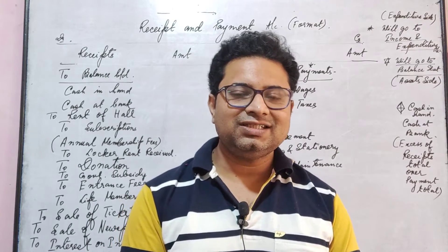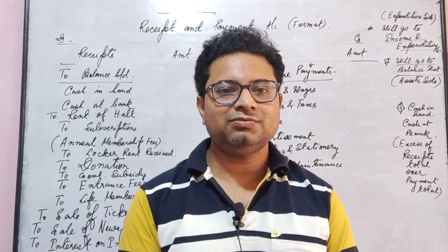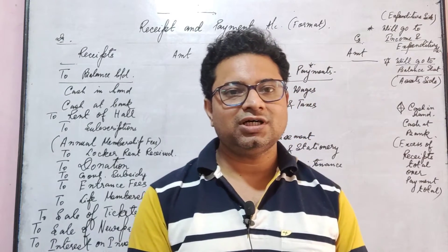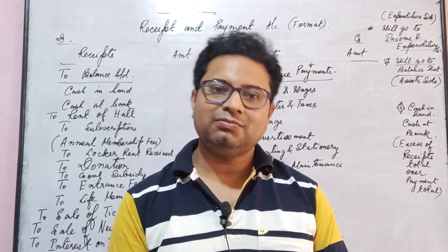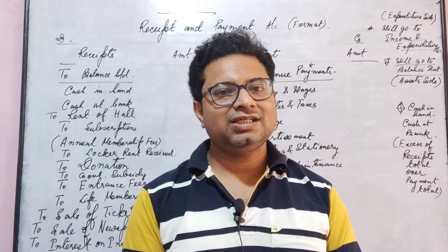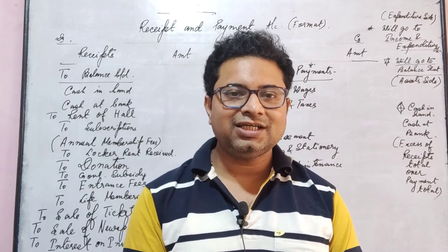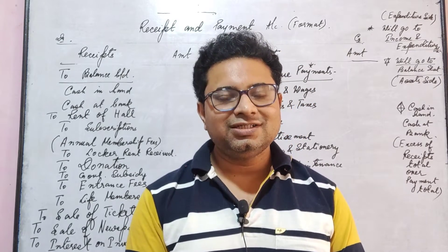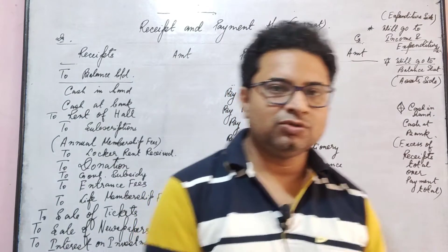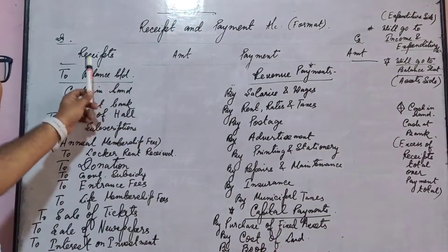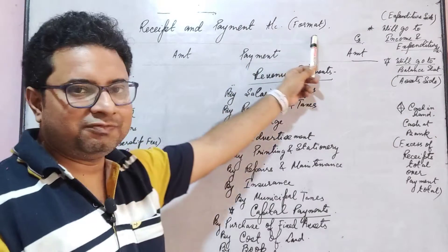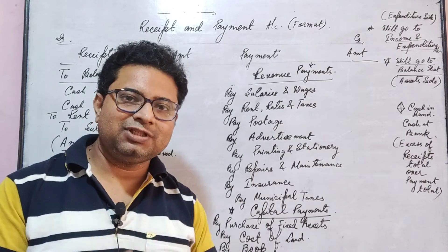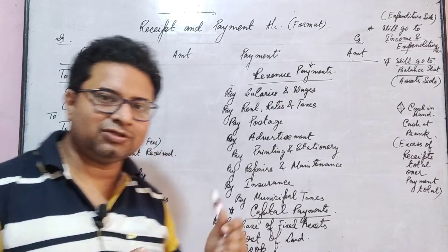So let's discuss the receipt and payment account. This basic format has three accounts. The receipt and payment account is made in a way that is exactly like a cash book. On the receipt side, you show where the money comes from. On the payment side, you show where the money goes.